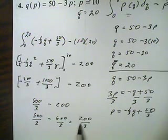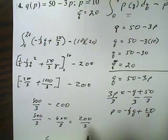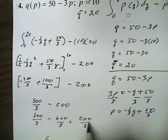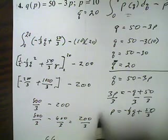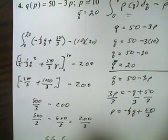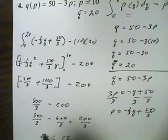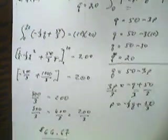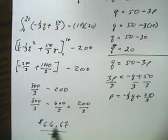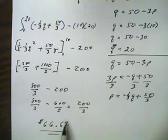All right, 3 goes into 20, 6 times. And let's see here, 18, that leaves me 20. That goes in another 6 times. And then I have decimals of repeating 6s, so that's 67 cents. Okay, so that'll be $6.67 would be my consumer surplus.